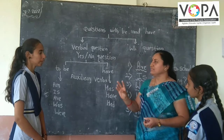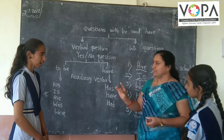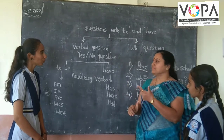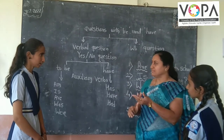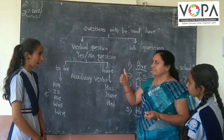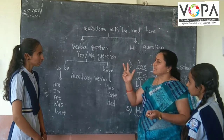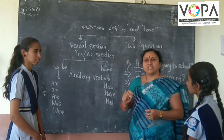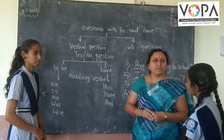The auxiliary verbs are: do, does, did, and is, are, was, has, have, had, will. Very good!